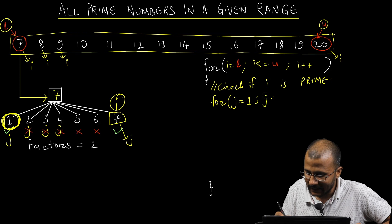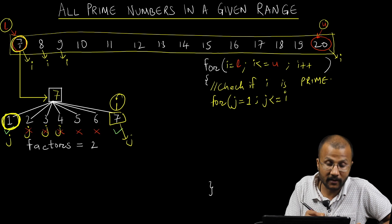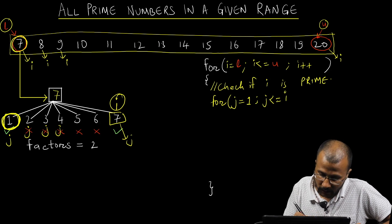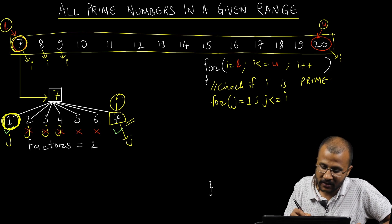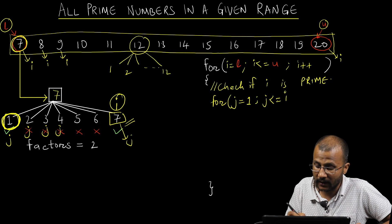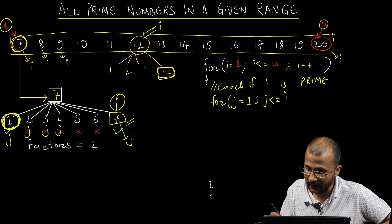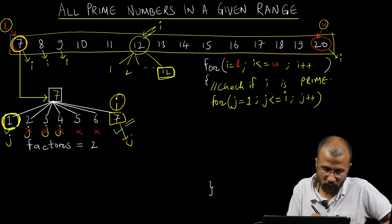j should be less than or equals to i. For the first time when I am checking if 7 is prime, I need to divide up to 7. If I am checking if 12 is prime, I will divide from 1 all the way up to 12, so j goes up to less than or equals to i. Each time I increment j by 1, because 1 plus 1 is 2, 2 plus 1 is 3, and so on. This is my inner loop.